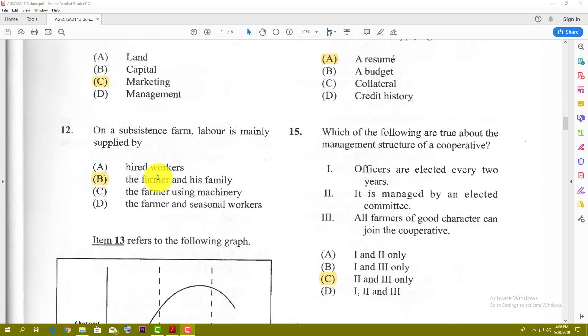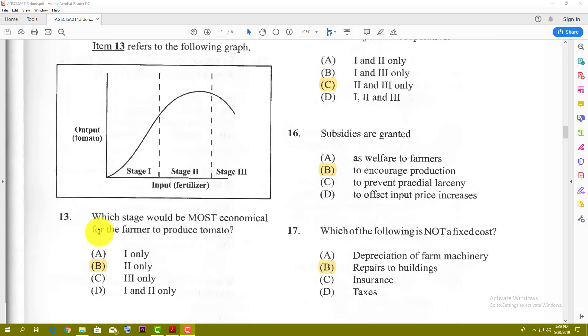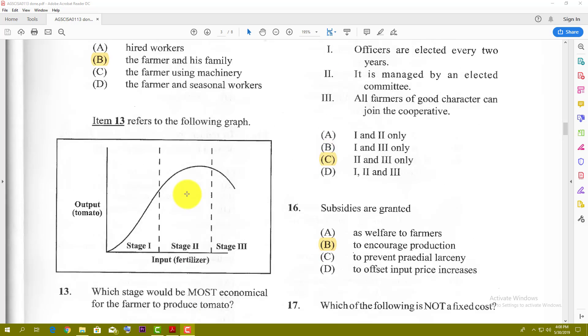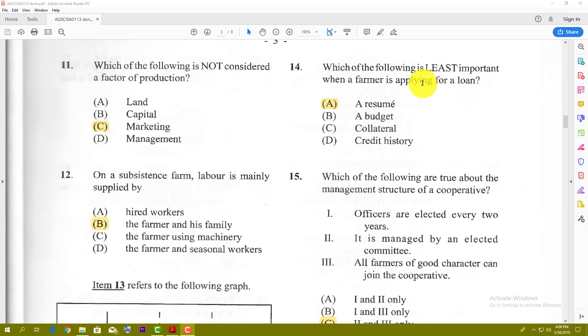Number eleven: which of the following is not considered a factor of production? The factors of production are land, labor, capital, and management. So the best answer is marketing. Marketing is not a factor of production. Number twelve: on a subsistence farm, labor is mainly supplied by the farmer and his family. Number thirteen uses this diagram. Which stage would be the most economical for the farmer to produce tomato? Stage three has diminishing returns already kicking in, so it cannot be that. Stage one still has more room to grow, so it cannot be that. The best answer is stage two, where it is most economical.